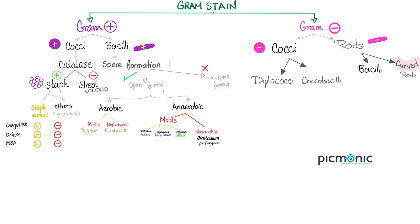Let's talk about gram negatives — cocci and rods. The cocci are two subtypes: diplococci (double coccus) and coccobacilli, something in between a coccus and a bacillus. As for the gram negative rods, we have the bacilli and the curved rods.